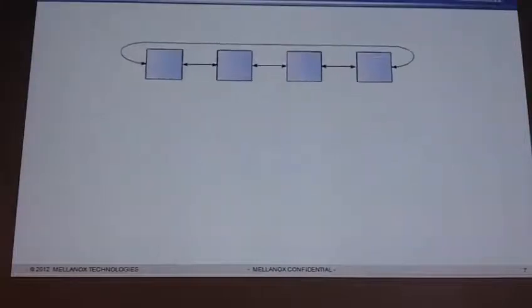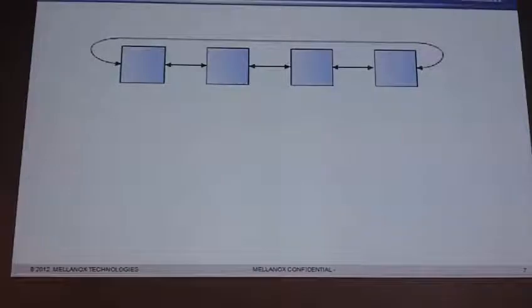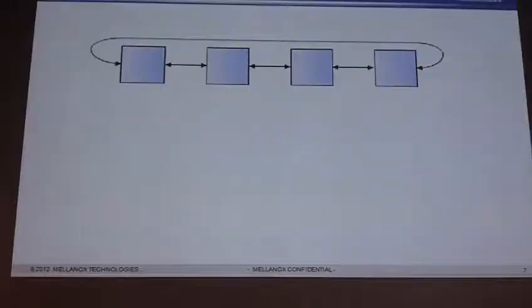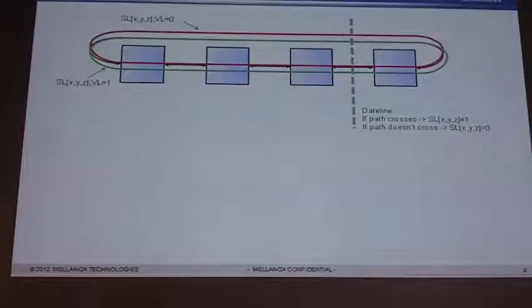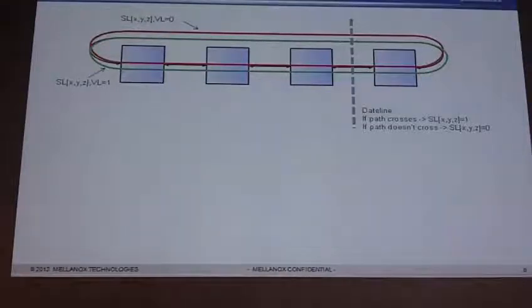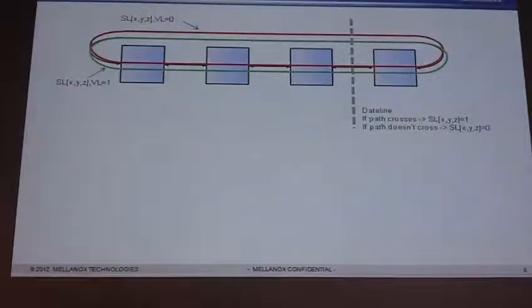Well, I have a big fat loop in my torus, so that's something I need to deal with. There's an algorithm called torus2qos that has been developed to deal with these loops. Basically, looking at just my X direction, the algorithm draws what's called a dateline all the way through all of the X coordinates. If a packet crosses the dateline, I use a particular service level, and if it doesn't cross the dateline, I use another service level.